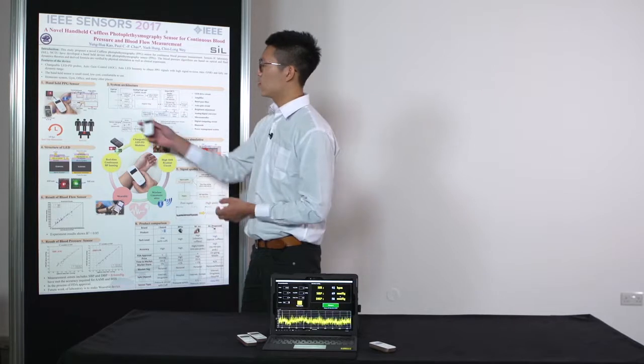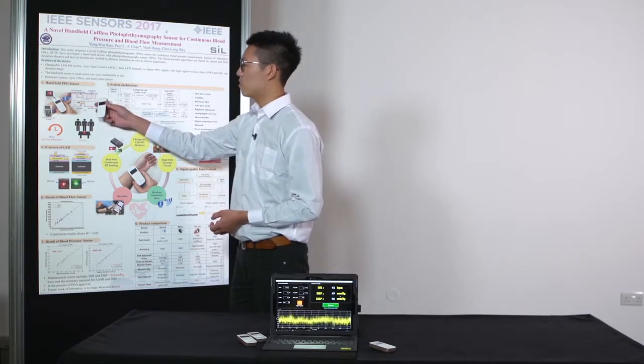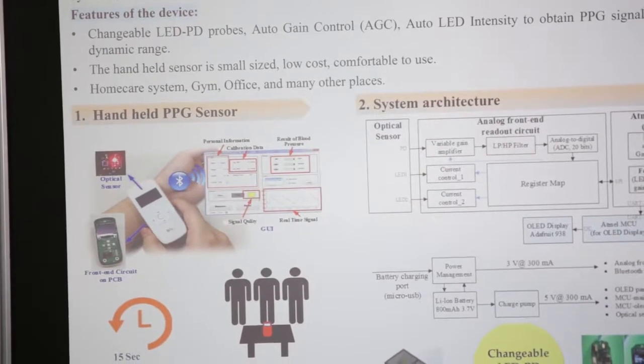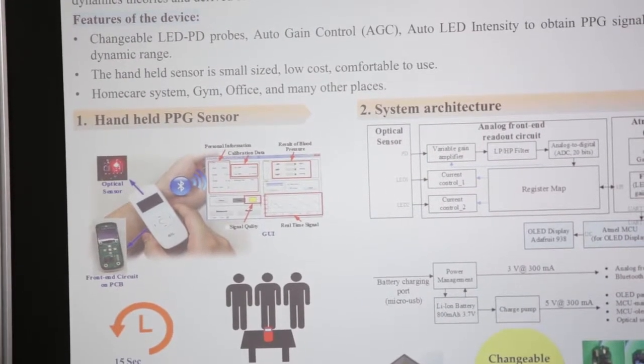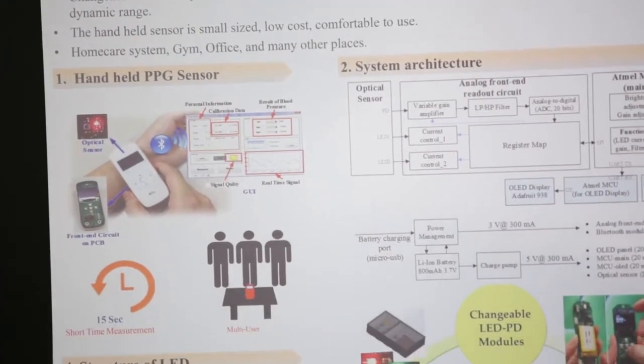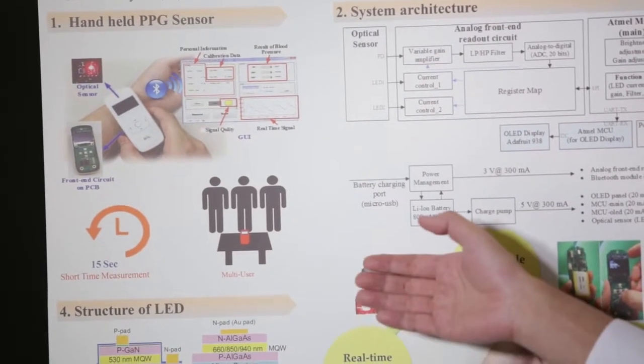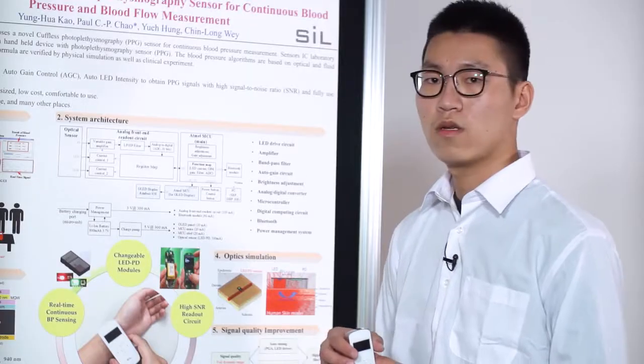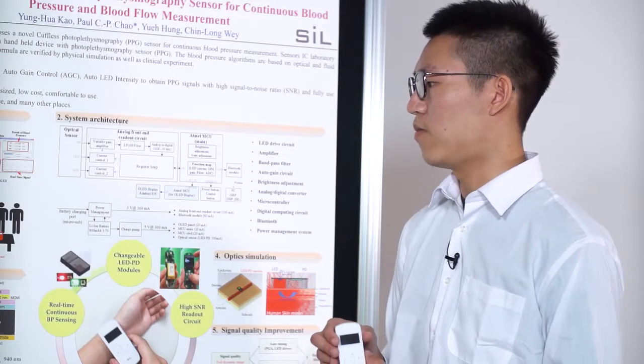So this device is a handheld PPG sensor and there is an optical sensor. The advantages are continuous measurement and we can handle multi-user to calculate blood pressure.